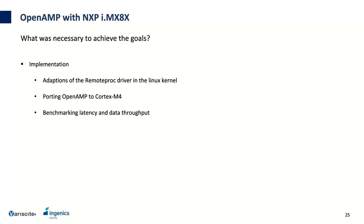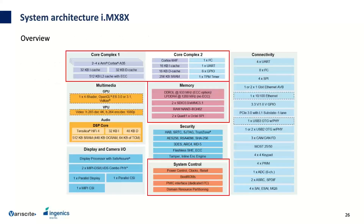Here is a quick overview of the system architecture of the IMX8X. For the OpenAMP implementation I used: the core complex with the Cortex-A35, the core complex with the Cortex-M4, a shared memory region, and the system control unit for remote proc — the important unit that determines which processor boots first.